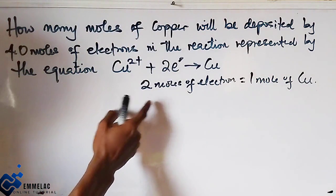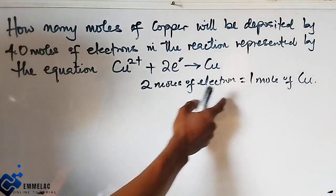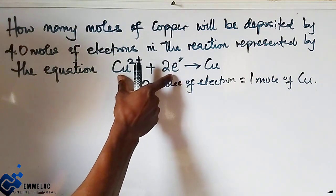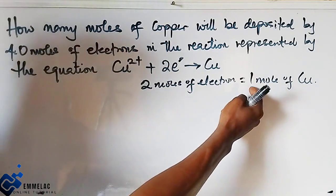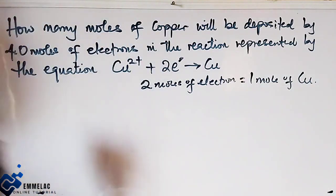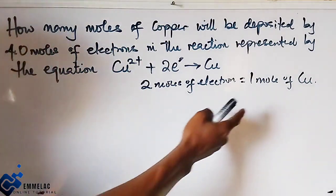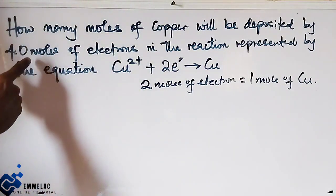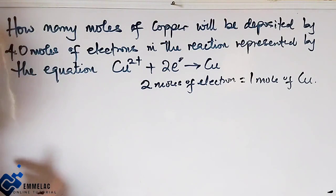Now if two moles of electron from this equation gave one mole of copper, the question now is how many moles of copper will be deposited from four moles of electron?